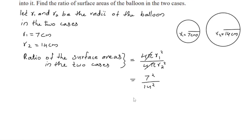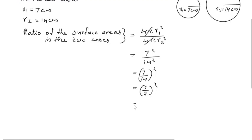Which we can write as 7 by 14 the whole squared, which is equal to 1 by 2 the whole squared. That is 1 by 4. Therefore, the ratio of the surface areas in the two cases is 1 is to 4.